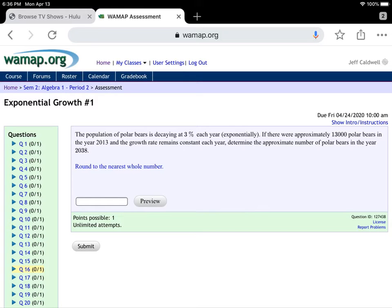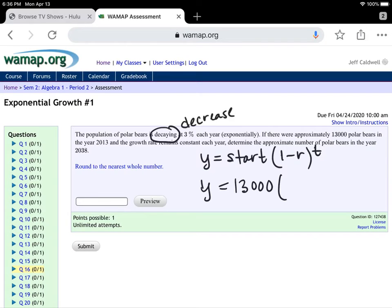And this is a question where you're decaying. Decaying means decrease. So our equation, y equals start times 1 plus r, is actually 1 minus r to the power of t. So we're starting with 13,000 polar bears, and it's decaying at 3%. That's 1 minus 0.03 to the power of t. Well, from 2013 to 2038, subtract those. 2038 minus 2013 is 25 years.